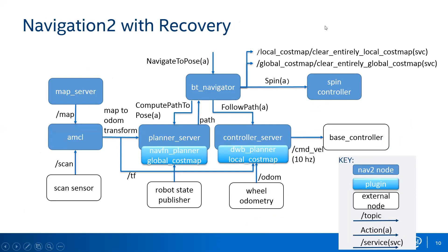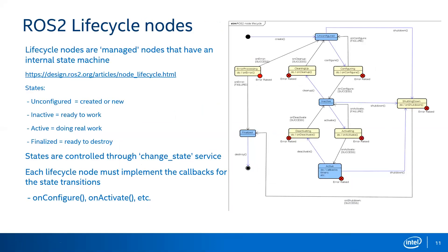This shows the top-level view with recovery behaviors added. The behavior tree I just showed is all inside the bt_navigator node, whose actions call the planner server, the controller server, or if things fail, the spin action or other recovery services.